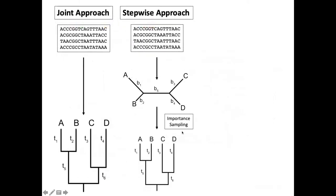Generally, the way that we do these analyses when we infer divergence times in a Bayesian context is we use what is called the joint approach. You have input data — your genetic sequence data generally — and then you have in your hierarchical Bayesian model all the parameters that are relevant: your tree topology, your divergence times, your genetic sequence model evolution parameters, your clock model parameters and everything. We basically infer the values of all these parameters at once.